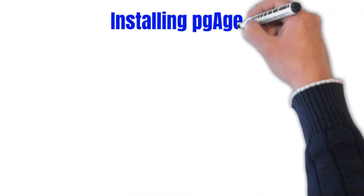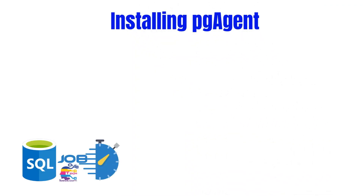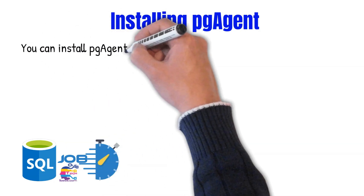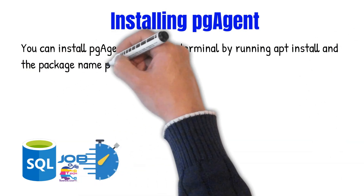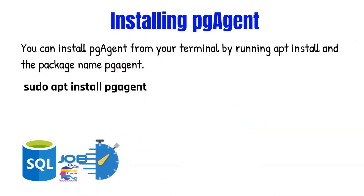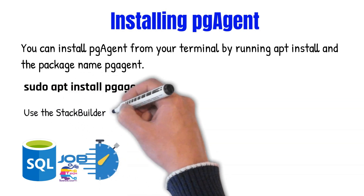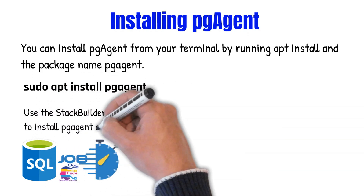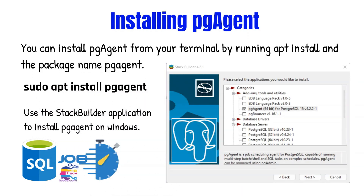To install the pg-agent daemon on a Unix system, you normally need to have root privileges. To install the agent on Ubuntu you'd use the command: sudo apt install pg-agent. Remember this will vary per Unix system, so consult your system documentation. For installation on Windows, pg-agent is available in a pre-built installer, so you can use the Stack Builder application to download and install it.